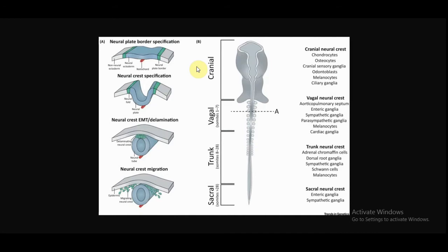The neural crest can be classified into four main anatomical regions: cranial neural crest, vagal neural crest, trunk neural crest, and sacral neural crest. Cranial neural crest cells migrate and form chondrocytes, osteocytes, cranial sensory ganglia, melanocytes, and ciliary ganglia. Trunk neural crest gives rise to Schwann cells and melanocytes. Sacral neural crest gives rise to enteric ganglia and sympathetic ganglia.